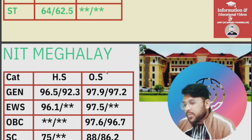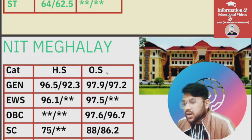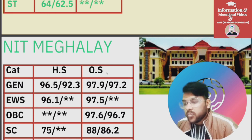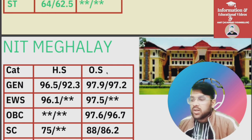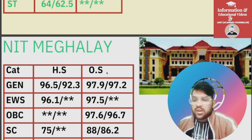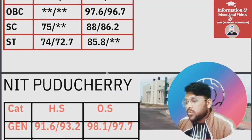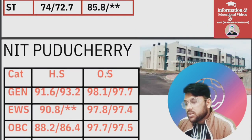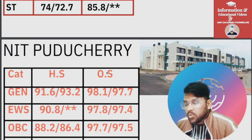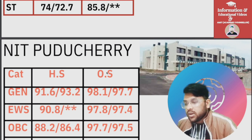For NIT Meghalaya: General 97.9, EWS 97.5, OBC 97.6, SC 88, ST 85.8 percentile. For NIT Puducherry: General 98.1, EWS 97.8, OBC 97.7.